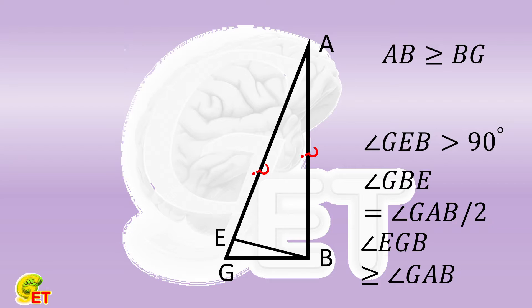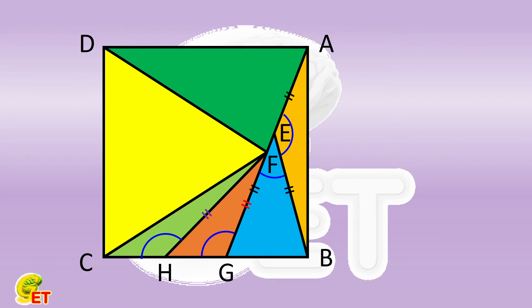Therefore, AB cannot be equal to AE. E being the midpoint of AG is the only choice. Based on these conclusions, we can replot the figure more accurately.